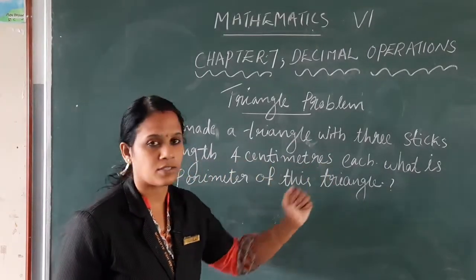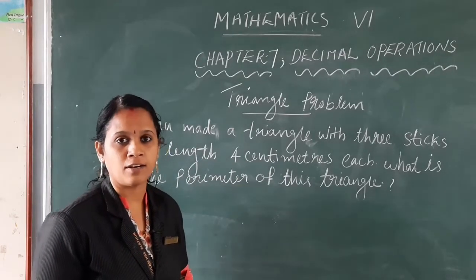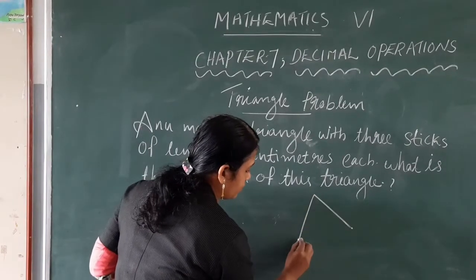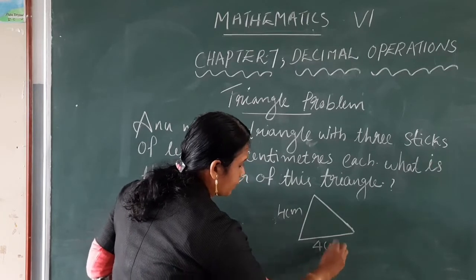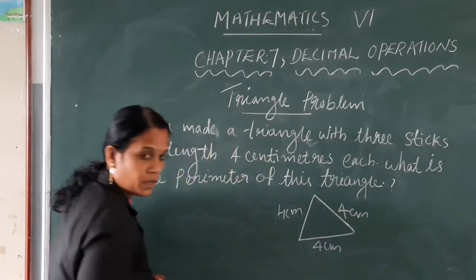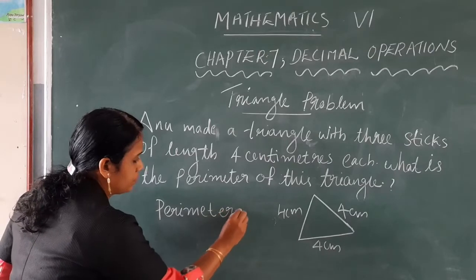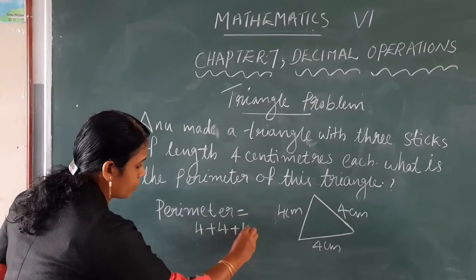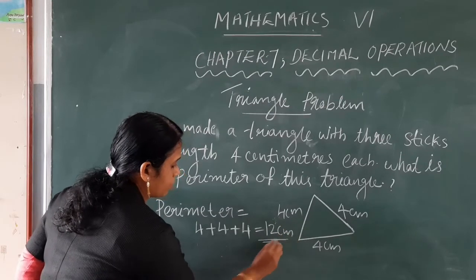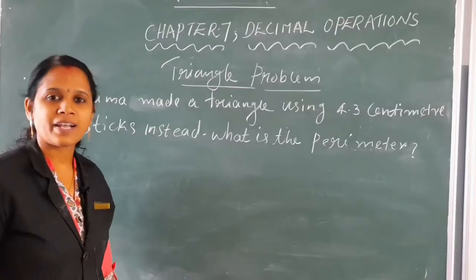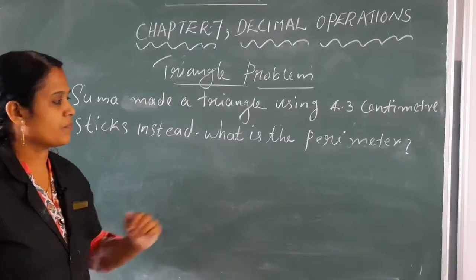How can we find the perimeter of a triangle? Here all sides are equal — 4 centimetre, 4 centimetre, and 4 centimetre. So the perimeter is equal to 4 plus 4 plus 4, side plus side plus side, which is equal to 12 centimetres.